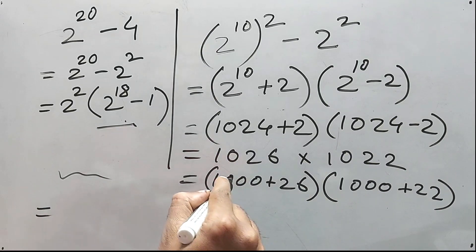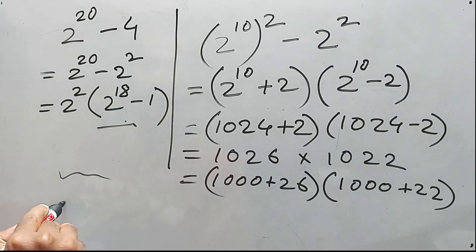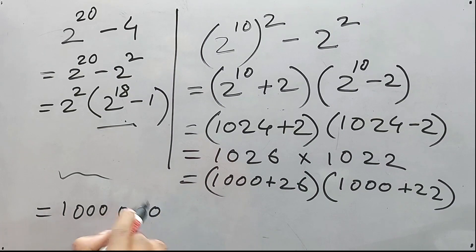Simple thing. 1000 into 1000. That is 1000 square. Definitely. So, triple zero for this and triple zero for this. Right? And again, 1000 into 22 and this 1000 into this 26.